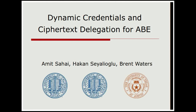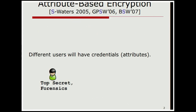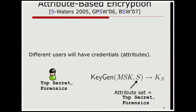Allison gave a beautiful talk before me, so I don't need to give too much background. Our work refers to both Key Policy and Ciphertext Policy ABE, but I'll focus on CP-ABE, Ciphertext Policy ABE. We have users in the system, and users have credentials — certain attributes that describe them. For example, Bob has 'top secret' and 'forensics' as his attributes. He's provided with a personalized secret key that encapsulates the exact attribute set he has.